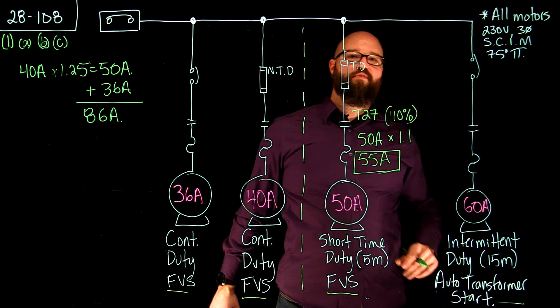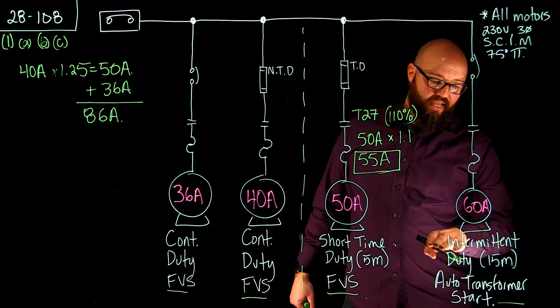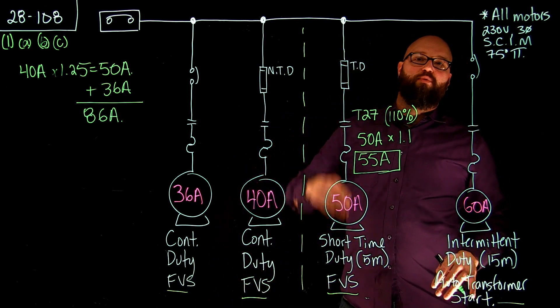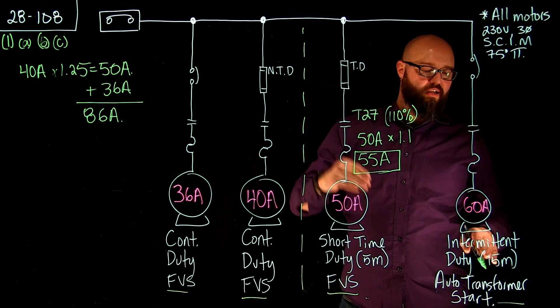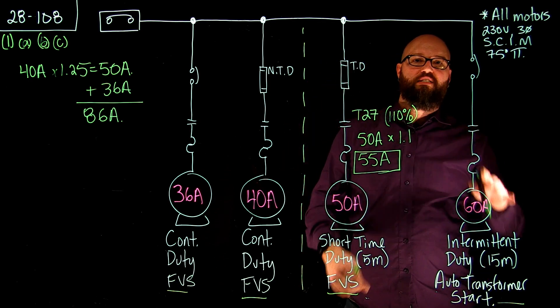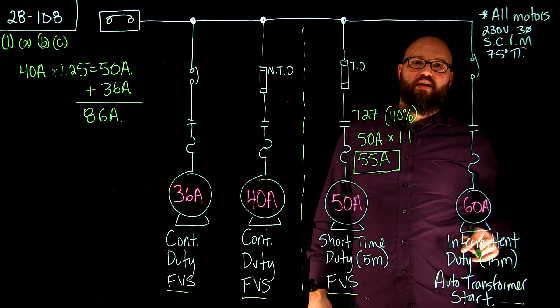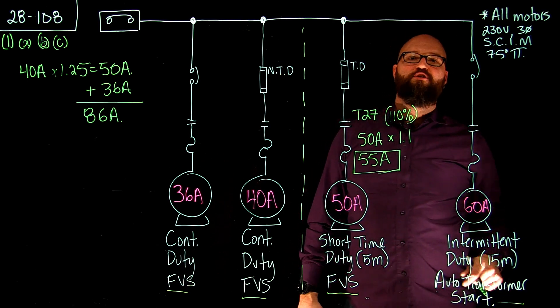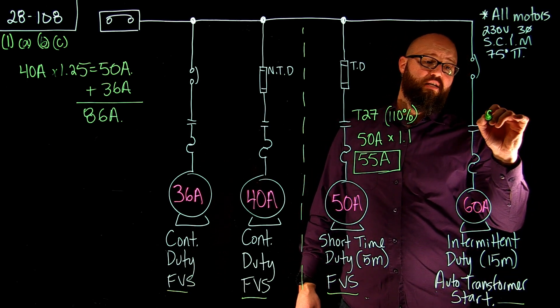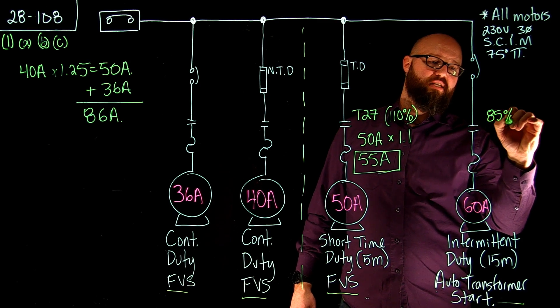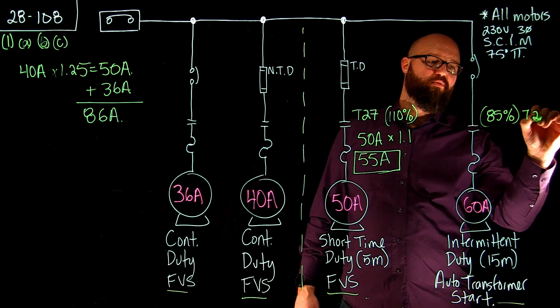We're going to do the same thing for our 60 amp motor here. Again, we have an intermittent duty rating. So we're going to go down until we find intermittent duty and we have 15 minutes. We're going to go across until we find the 15 minutes on that table, and it tells me for an intermittent duty at 15 minutes, I should see 85% from Table 27.